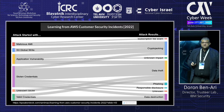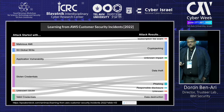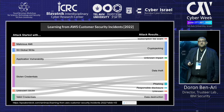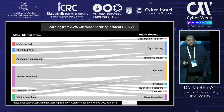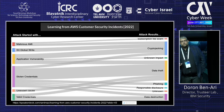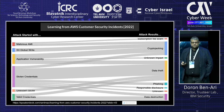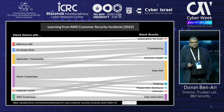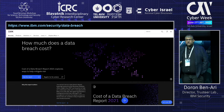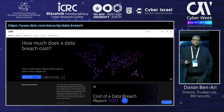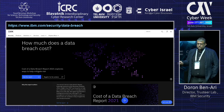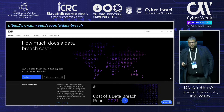Looking at reasons for that — again, this is not scientific, just infographic material — if you look at the left-hand side, you see the key reasons for breaches, and there's this big purple piece that represents stolen credentials.